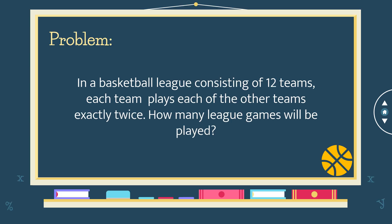The problem will be: in a basketball league consisting of 12 teams, each team plays each of the other teams exactly twice. How many league games will be played?